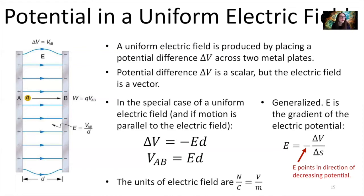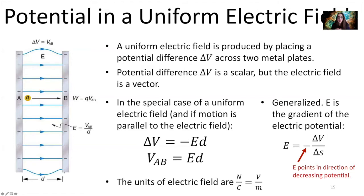The electric field between two parallel plates — if one plate is positive and the other is negative — will point away from the positive plate toward the negative plate. There is then a potential difference between the potential at plate B and the potential at plate A. We can quantify that potential if we know the electric field and the distance that the plates are separated.